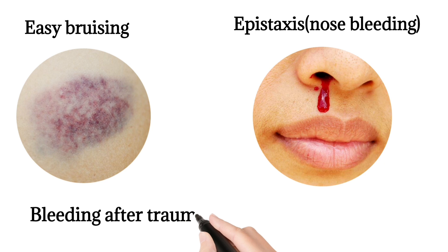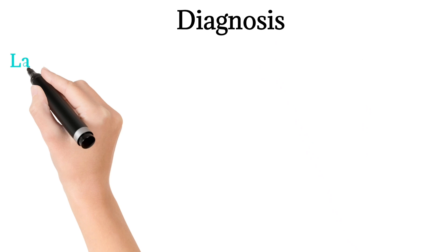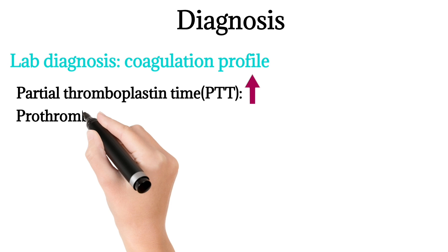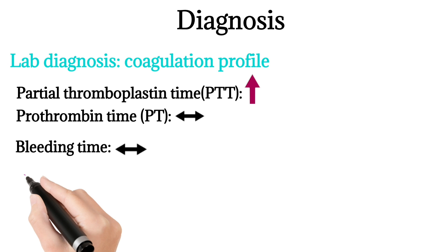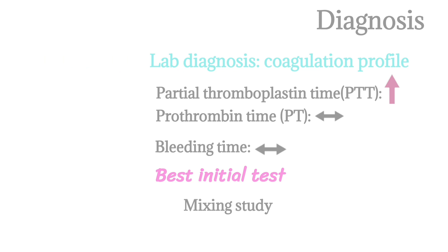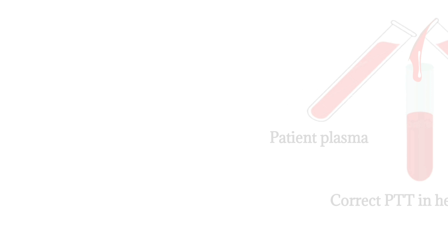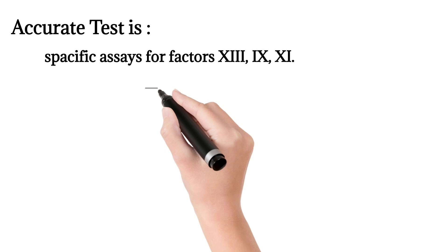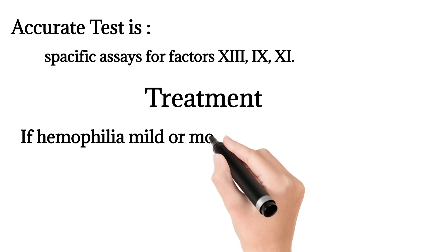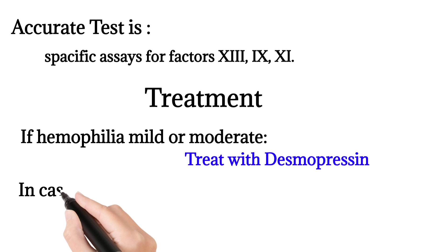For diagnosis, lab results show that partial thromboplastin time will be increased, while prothrombin time and bleeding time are normal. The best initial test is the mixing study, in which patient plasma is mixed with plasma from a normal individual. If the thromboplastin time corrects, that means the patient has haemophilia. The most accurate test is specific assays for factors 8, 9, and 11.